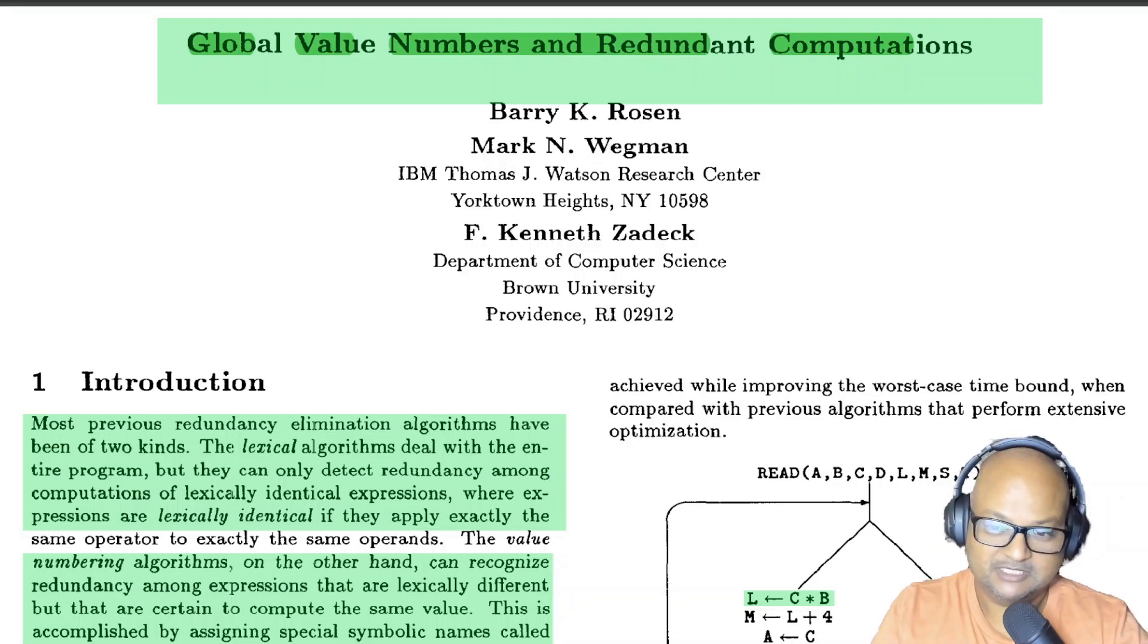This was published back in 1988 and the title mentions global value numbers which is going to make sense once we see how SSA is defined and also redundant computations because that really is one of the key goals of any intermediate representation to optimize away all redundant computations within your code.